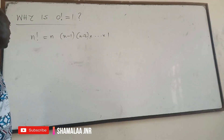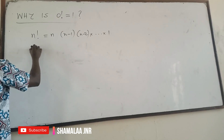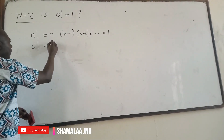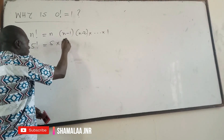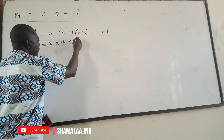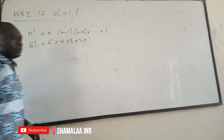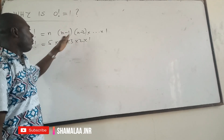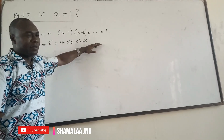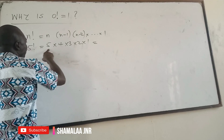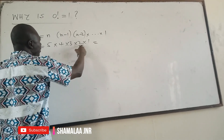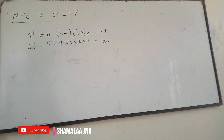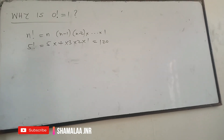Do you see it? So this means that when I give you, say, 5 factorial, what it means is that you write 5, multiply it by 4, multiply it by 3, multiply it by 2, multiply it by 1. You write a number and reduce it, keep reducing it by 1, until you get to 1. So 5 times 4 times 3 times 2 times 1 gives you 120. So 5 factorial is equal to 120.